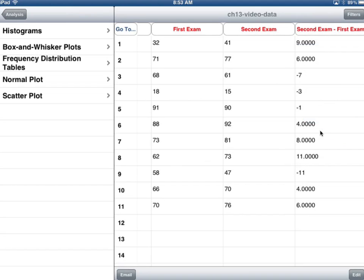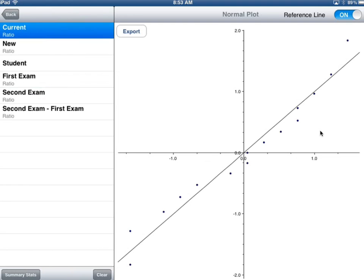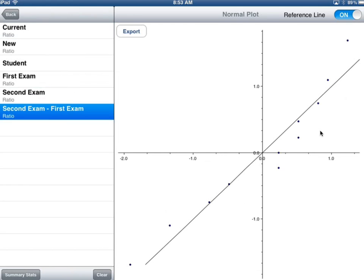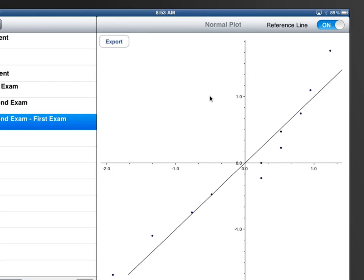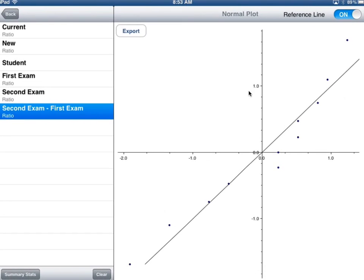I need to think about my assumptions. I need to do a normal plot and select second exam minus first. If you look at this, this bothers me a little bit. This isn't horrible. You could make an argument for either a t-test or a sign test, but just for the heck of it we're going to do both. You would draw this on your paper, and if you thought it was normal, then you go ahead and do a t-test.